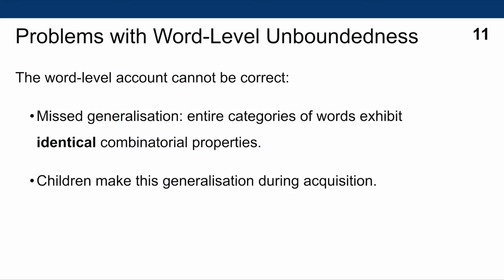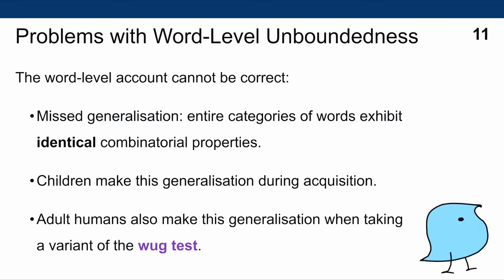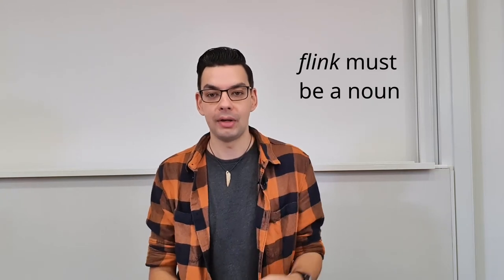We want to account for the fact that entire categories of words exhibit identical combinatorial properties — a generalization that children make during language acquisition. Adults also make this generalization, as shown by a variant of the WUGS test originally used to show that children generalize by category. For example, if I tell you that a 'flink' I ordered arrived in the post today, you might not know what a flink is, but you know it must be a noun because I used it in the slot where nouns go.